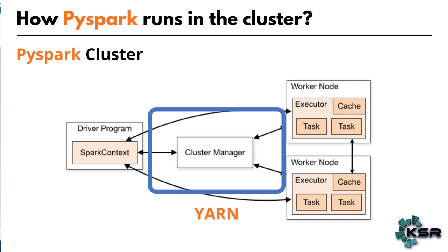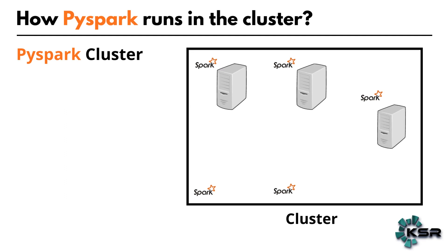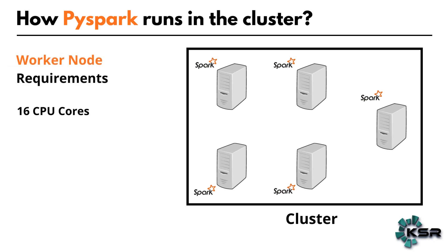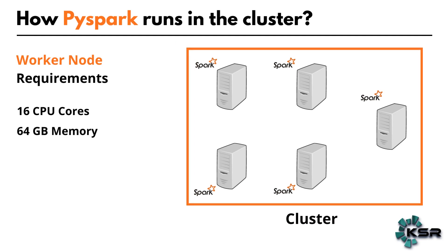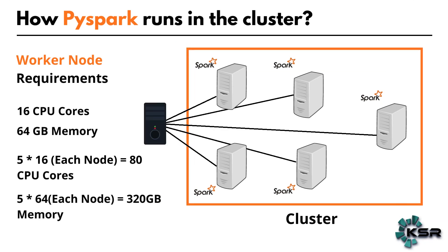Let's assume we have five worker nodes in the cluster, and for each worker node we have 16 CPU cores and 64 GB memory available. For five nodes: 16 × 5 = 80 CPU cores, and 64 × 5 = 320 GB overall memory available. So the cluster is a pool of computers connected together, and this is the total cluster memory and configuration.